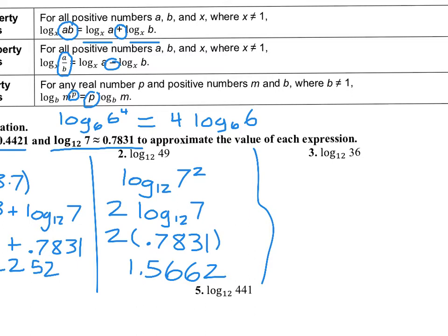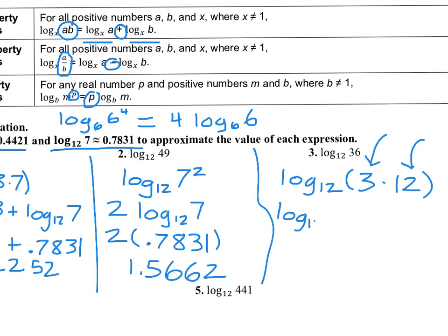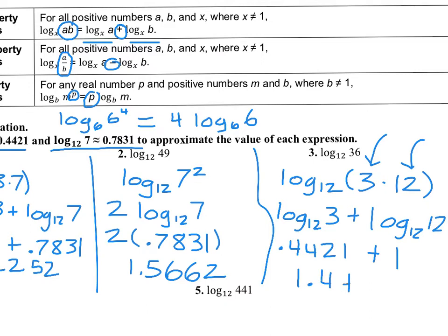For number 3, we're given log base 12 of 3 and log base 12 of 7. We cannot break 36 into 3s and 7s, but we can break 36 into 3 times 12. So 3 is given, and we don't need a calculator for log base 12 of 12 because 12 is the base raised to the first power — that equals 1. Breaking this up using the product rule, log base 12 of 3 is 0.4421 and log base 12 of 12 is 1. Adding those together gives 1.4421.